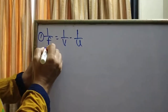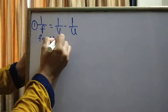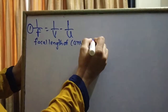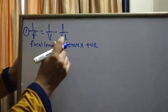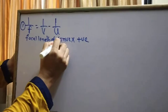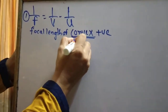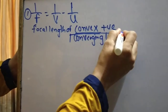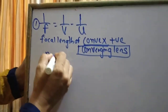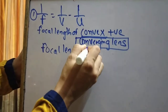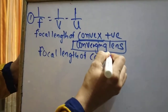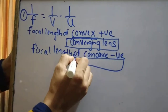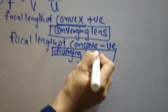The focal length of a convex lens is always taken as positive. A convex lens is a converging lens. The focal length of a concave lens is always negative. A concave lens is a diverging lens.